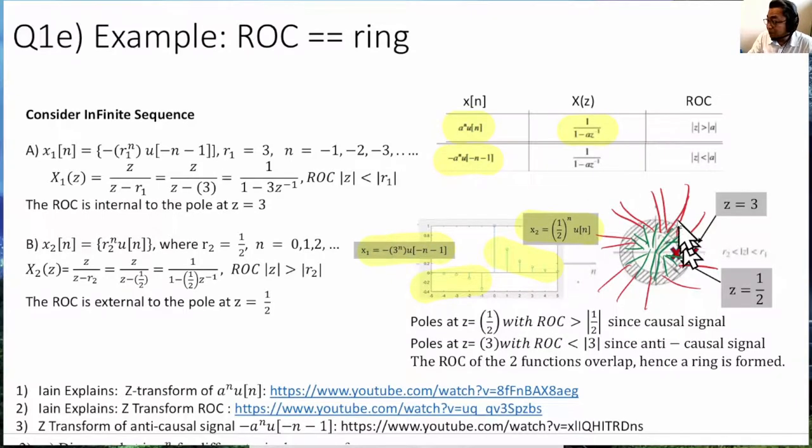It is the overlap between this red and green that is the final ROC. And hence, the final ROC is only this annular ring.